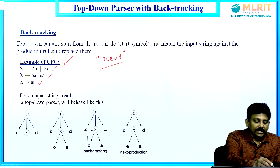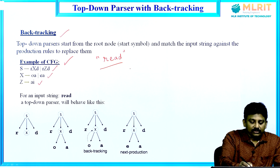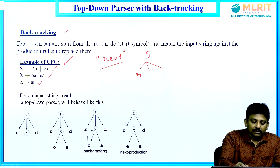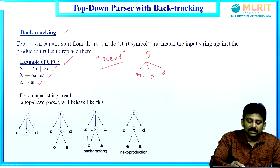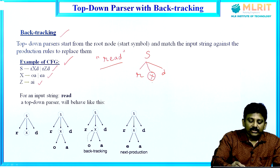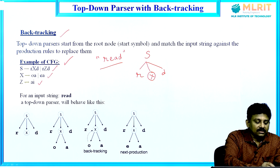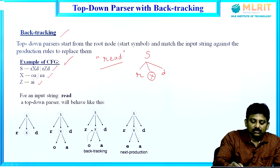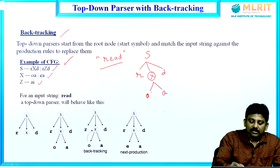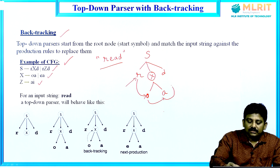This top-down parser with backtracking will try to use the very first production rule, that is S derives rxd. Here r and d are terminal symbols, and X is a non-terminal symbol. So we need to replace X. We have two rules for X: X derives oa, and X derives ea. The backtracking top-down parser will use the first rule, X derives oa, replacing X with oa. If you collect all the leaf nodes, we get the string 'road', but the given input string is 'rea'.